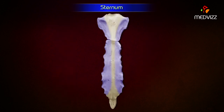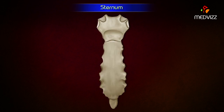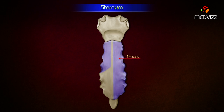The anterior surface of each side gives origin to the pectoralis major muscle. Its posterior surface is smooth and slightly concave. The lower part of the posterior surface gives origin to the sternocostalis muscle. On the right side of the median plane, the posterior surface is related to the pleura, which separates it from the lung. On the left side of the median plane, the upper half of the body is related to the pleura and the lower half to the pericardium.